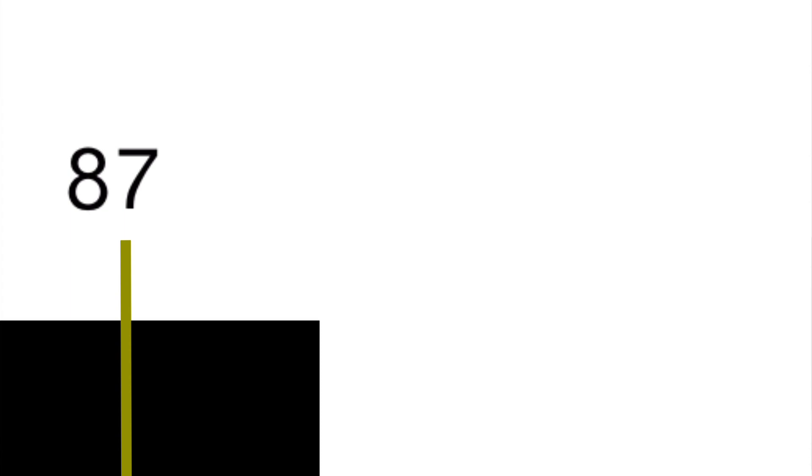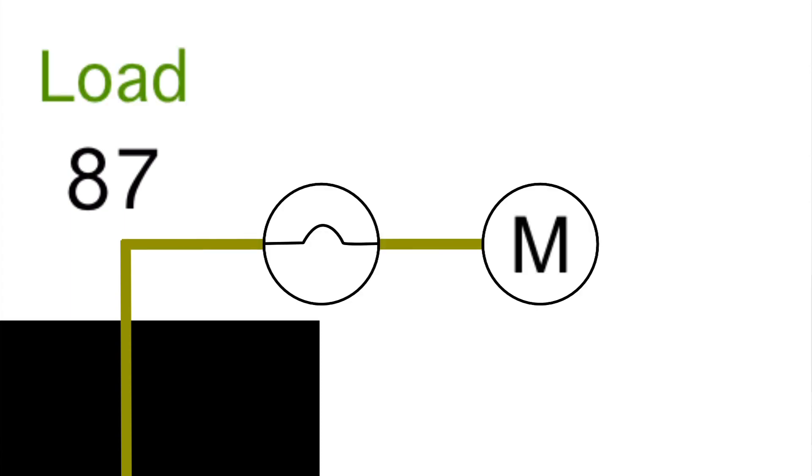87 would be going out to our load. Our load can be the headlights, it can be a motor, it could be anything that we are powering up with the relay. Anything we're powering with the relay is known as our load.